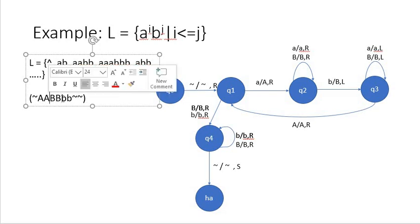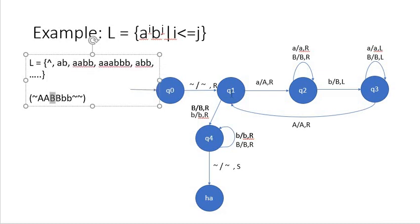Once all small a's have been converted into capital A and when I get capital B from state q1, that means all the small a's have been converted into capital. Now I have to make sure that in the journey going towards the right until I get tilde, I must encounter only capital B or small b. Capital B's will be kept as capital B going right, small b's will also be kept going right, and once we get tilde we will be in the accepting state.